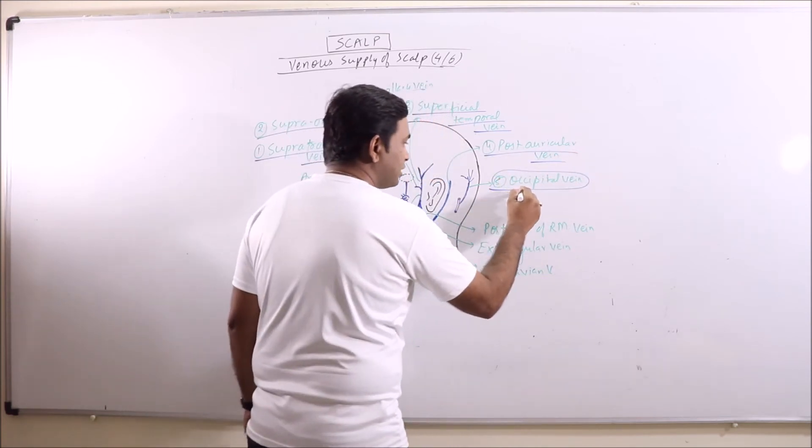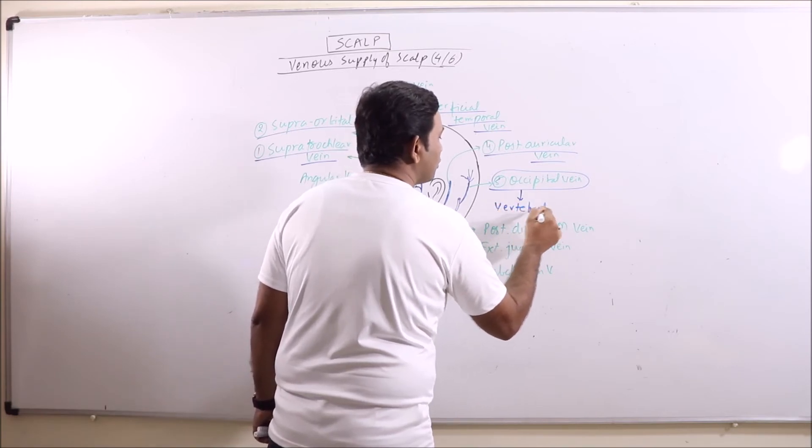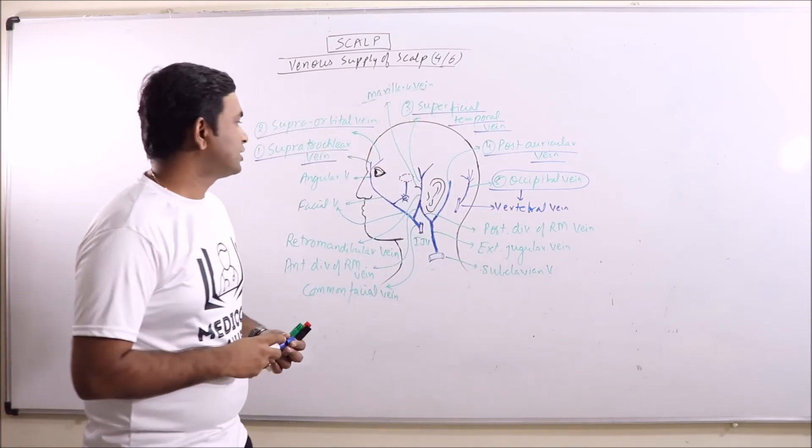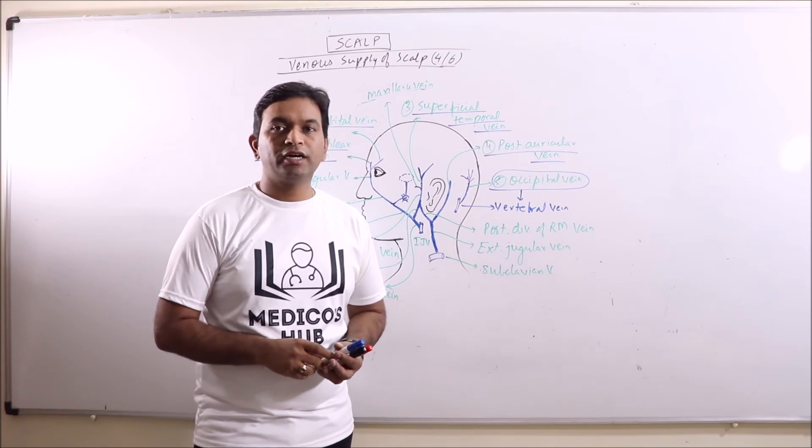These occipital veins basically drain into vertebral vein. This is vertebral vein. So this is the venous drainage of scalp.